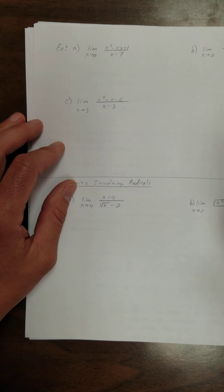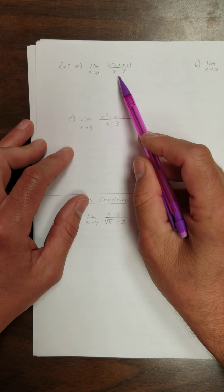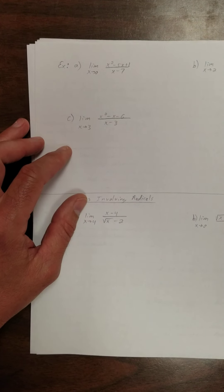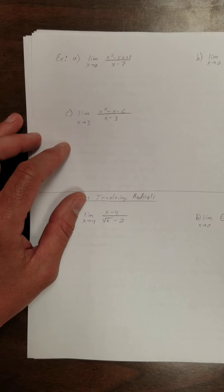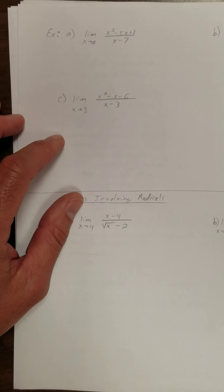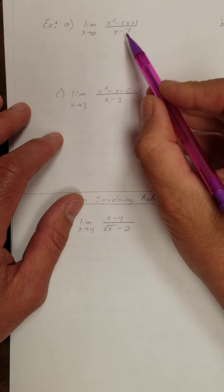An example here. Suppose I want to calculate this limit right here. So how do I calculate that limit? Let me try to zoom in a little bit here. Alright, how do I calculate this limit?